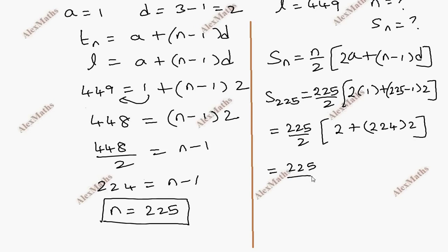225 by 2 is 2 plus 448. Now, 450 by 2 is 450.